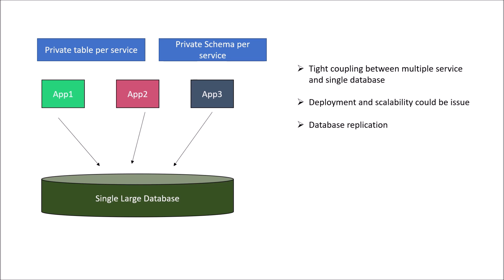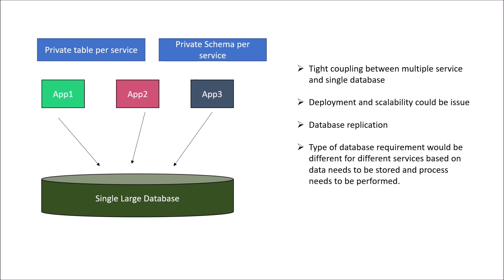Moreover, if application 1 requires a different database - suppose application 1 processes graph data, so it needs Neo4j - and application 2 requires unstructured data, so it needs a NoSQL database like MongoDB, then using a single large database makes it impossible to have two different databases like Neo4j, MongoDB, or SQL. So, different types of database requirements are also a concern, since different services need to store and process data differently.